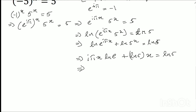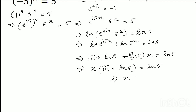So I can write: i pi x plus x ln 5 equals to ln 5. Factoring x out: x times (i pi plus ln 5) equals to ln 5. So I get the first answer: x equals to ln 5 divided by (i pi plus ln 5).